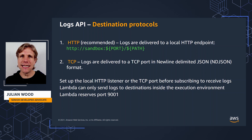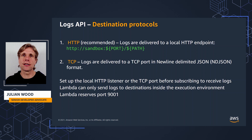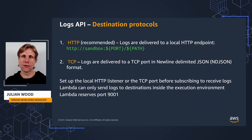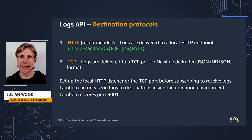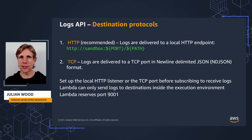HTTP is preferred over TCP because with TCP, Lambda can't acknowledge that logs are delivered to the application layer, so you may lose logs if your extension crashes, and there's also a chance logs can get corrupted. Lambda can only send logs to destinations that are inside the execution environment and reserves port 9001 — so don't pick that — but there are no other port number restrictions.